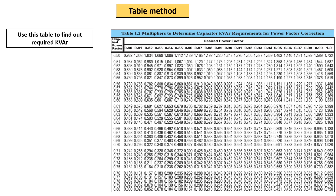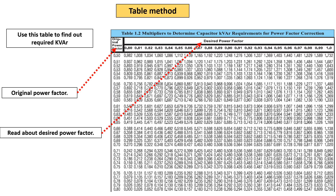Now we will look at the table method. This given table has the first column as the original or present power factor. The desired or required power factor is on the other axis. The values in the table are the multiplication factors.